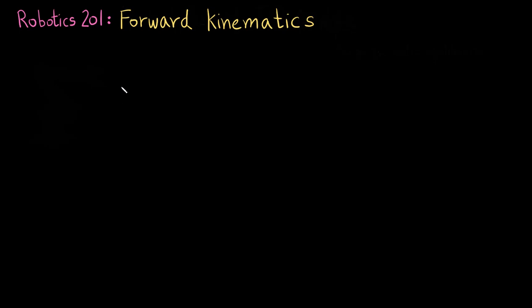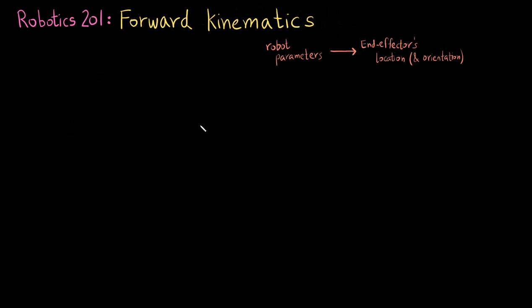Welcome back to Engineering Simplified. In today's video we are going to be talking about forward kinematics. What is the forward kinematic of a robot? Basically, when you are given the robot parameters — so if it is a robot consisting of revolute joints, you are given the angles of those joints — you need to find the end effector's position and often times its orientation as well. So you go from the robot parameters to the end effector's position and orientation. That is what forward kinematics is.